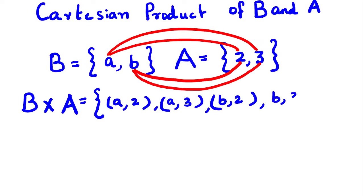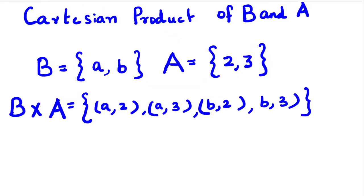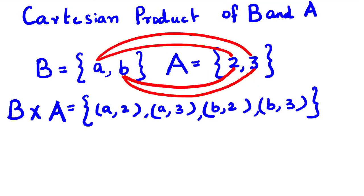Here we combine each element of set B with each element of set A to form ordered pairs. We can see that in each of the ordered pairs, elements of set B come first and then come the elements of set A.